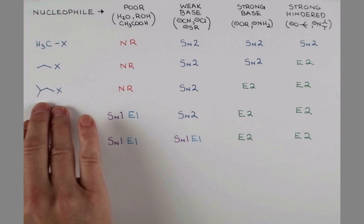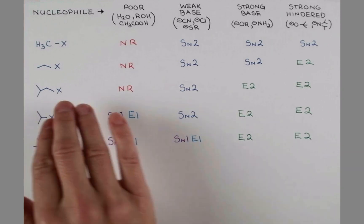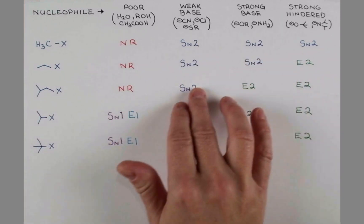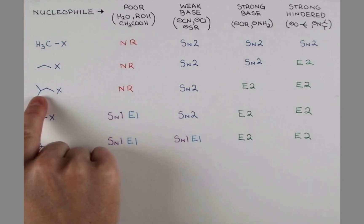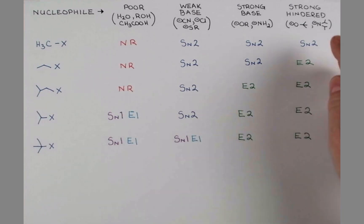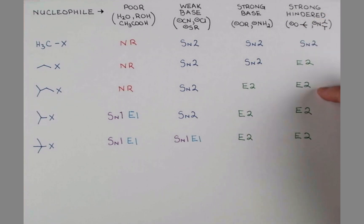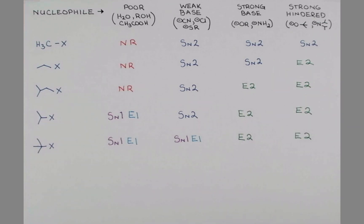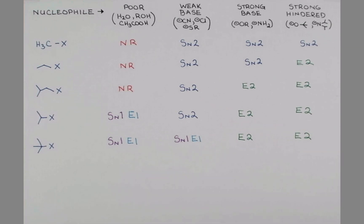Once substitution mechanisms become available with primary substrates, we're going to get SN2. As the substrate becomes more hindered, E2 becomes a factor, and strong hindered bases, whenever possible, promote E2. And that actually extends all the way down into this corner of the chart with our secondary and tertiary substrates, so that's a good general trend to notice.